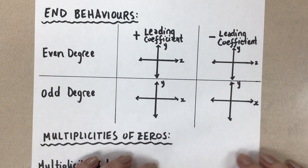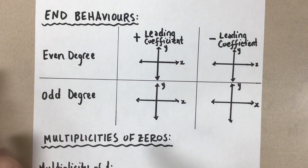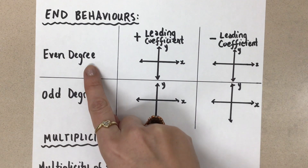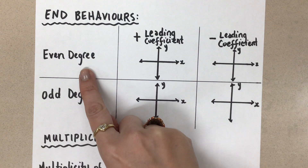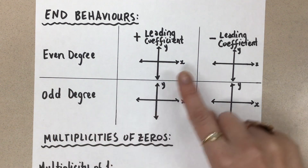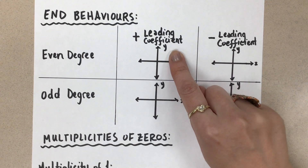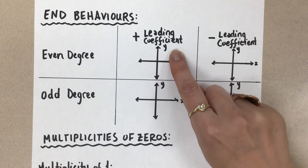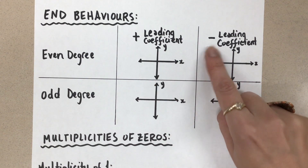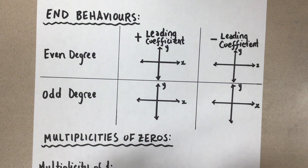First we're going to talk about end behaviors. The end behaviors of a polynomial function depend on whether the function has an even degree or an odd degree — we're talking about the degree of the entire polynomial — and then we combine that with the leading coefficient: the coefficient of the highest degree term, whether it's positive or negative. Combining these two characteristics gives us the end behaviors for any polynomial function.